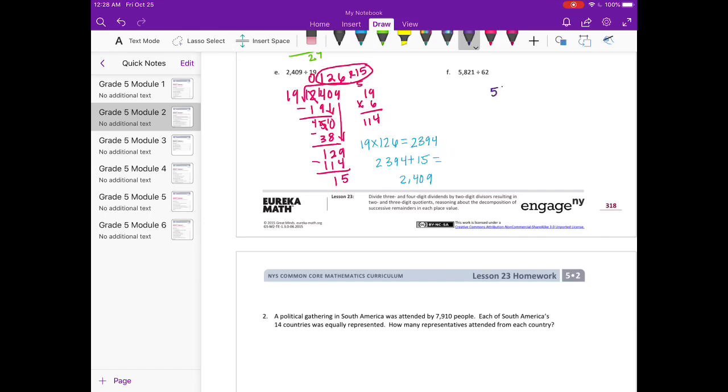5821 divided by 62. So 62 can't go into 5, it can't go into 58. So how many times can it go into 582? Let's start with 8. 8 times 6 is 48, 49. We can probably add another 62. 558. Alright, so we can go in this 8 times plus this 1. So 9 times. We get 558. If we subtract, we get 24 and bring down the 1.